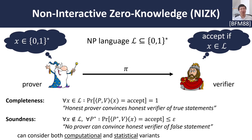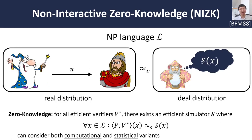Soundness holds except perhaps with small, possibly negligible probability. Here we can consider two possible notions: computational soundness, where this property only needs to hold for computationally bounded provers, in which case we have an argument system; or statistical soundness, where soundness should hold even against computationally unbounded provers, in which case we have a proof system. The third property of a NIZK is zero knowledge, which intuitively says that no verifier should be able to learn anything more about the statement being proved other than the fact that the statement is true.